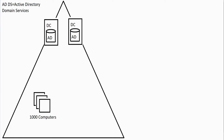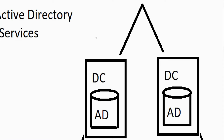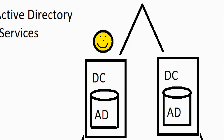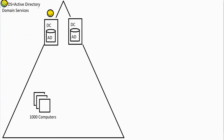An interesting thing about domain controllers is that they replicate. Everything you do on one will replicate over to the other. So if you create a user account on the first one, replication will occur between both of them. This replication means that a user could log on to any one of thousands of machines and authenticate with a domain controller.